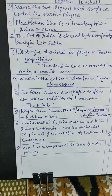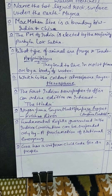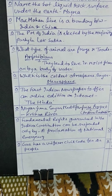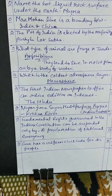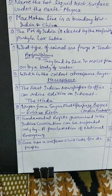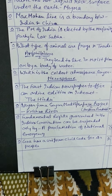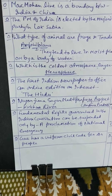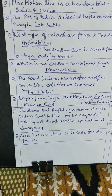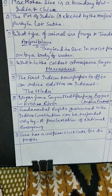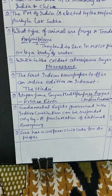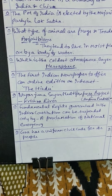The coldest atmosphere layer is the mesosphere. The first Indian newspaper to offer an online edition on the internet was The Hindu. The Nagarjuna Sagar multi-purpose project is on the Krishna River and is located in Andhra Pradesh.